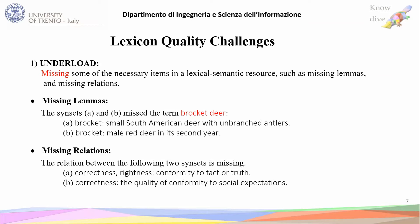What are the challenges for lexicon quality? We categorized these challenges into two categories. The first one is the underload category and the second one is the overload. In the underload challenge, there are missing necessary items in the lexical semantic resource, such as missing lemmas or missing relations altogether.